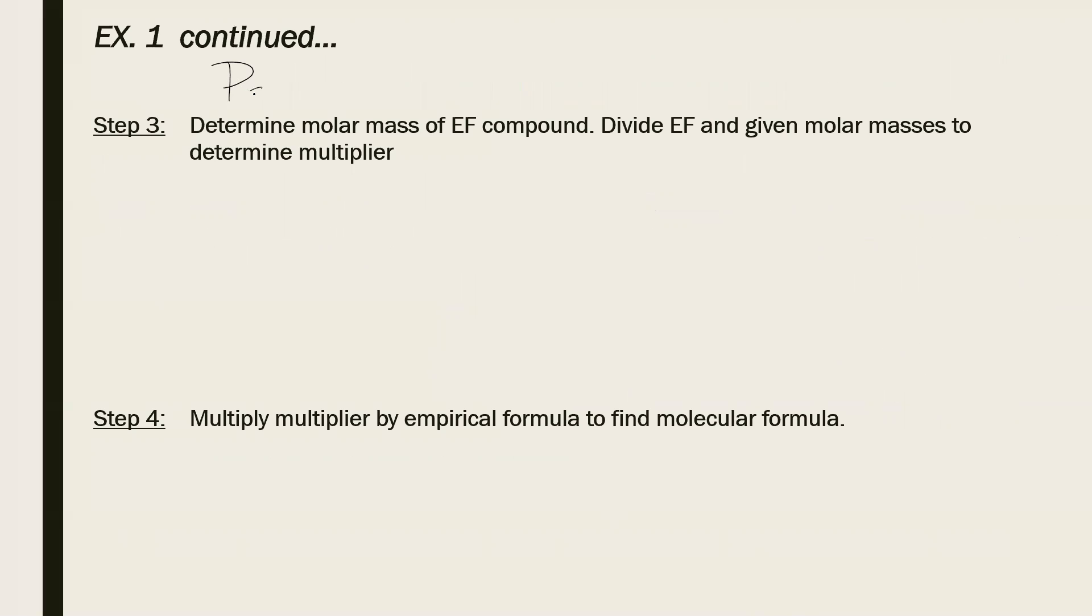So we said it's P2O3. So I've got two phosphorus times the atomic mass, three oxygen times its atomic mass. Add those together, and I get my empirical formula molar mass to be 109.91 grams per mole.